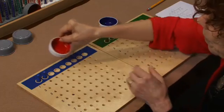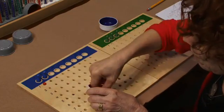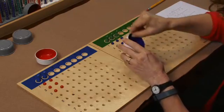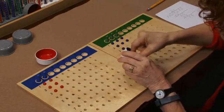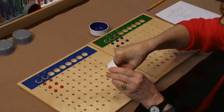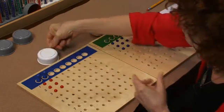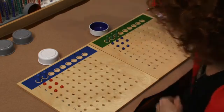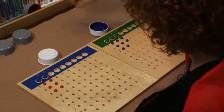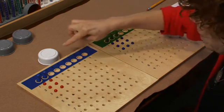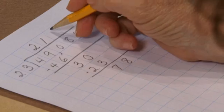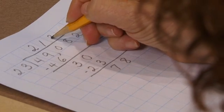And now distribute hundreds to the tens. I need to exchange this last hundred for ten tens. And this is as far as I can go. So the units place gets three tens. So I'll record three in the tens place.